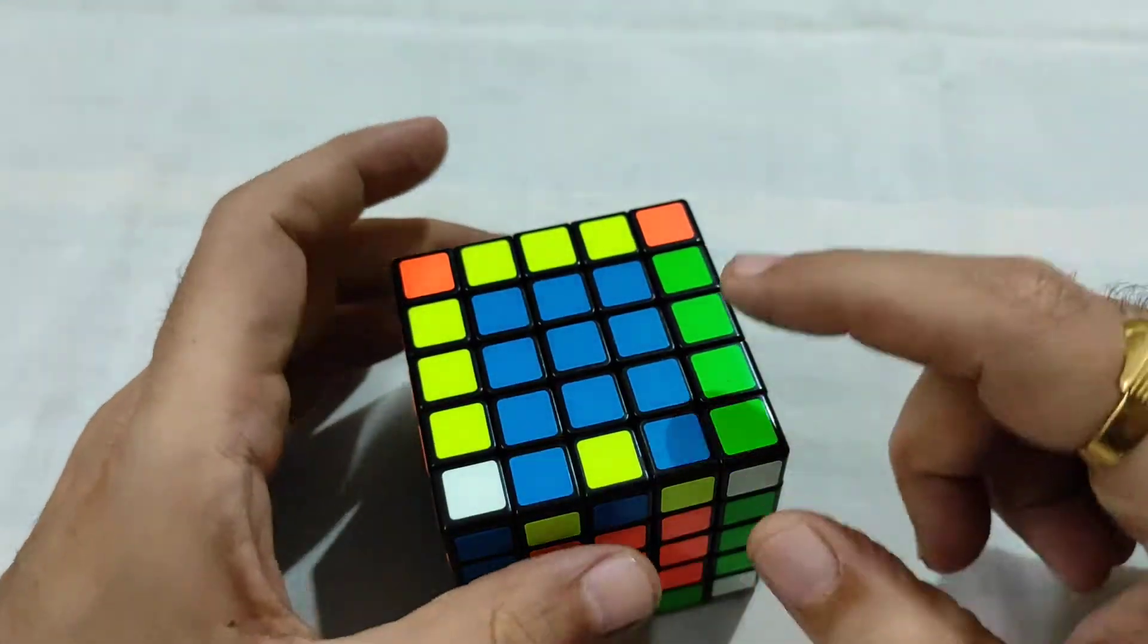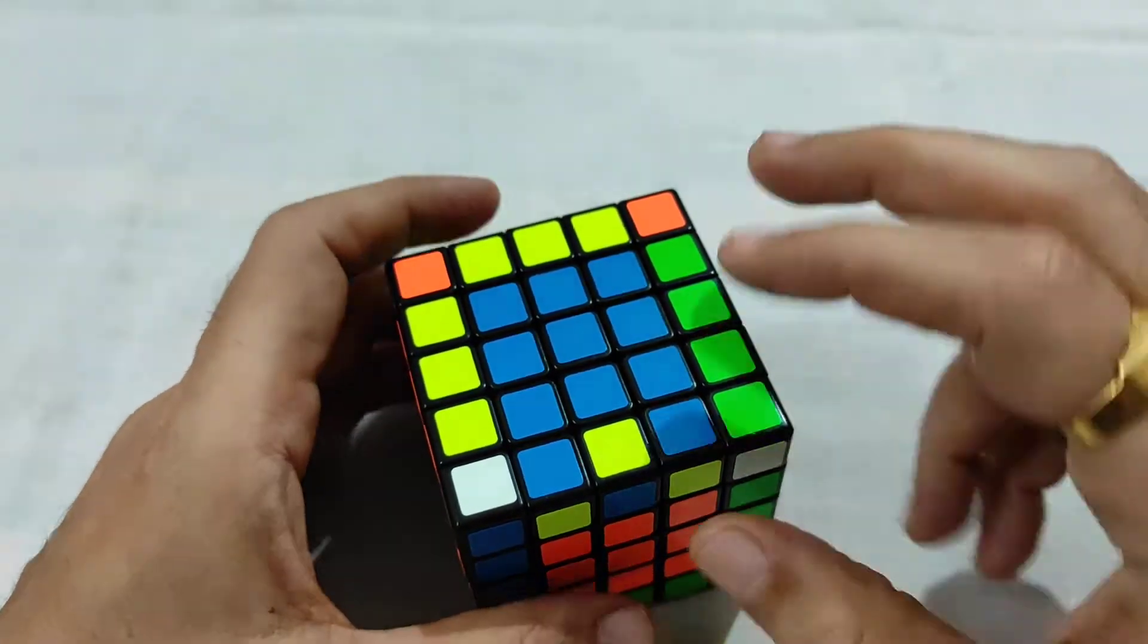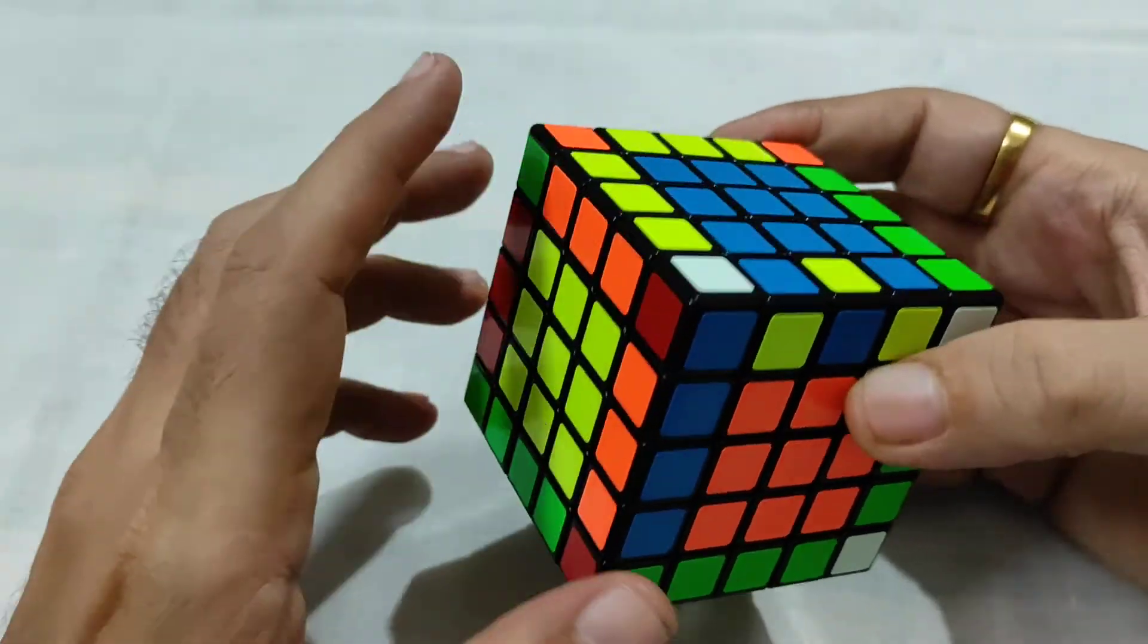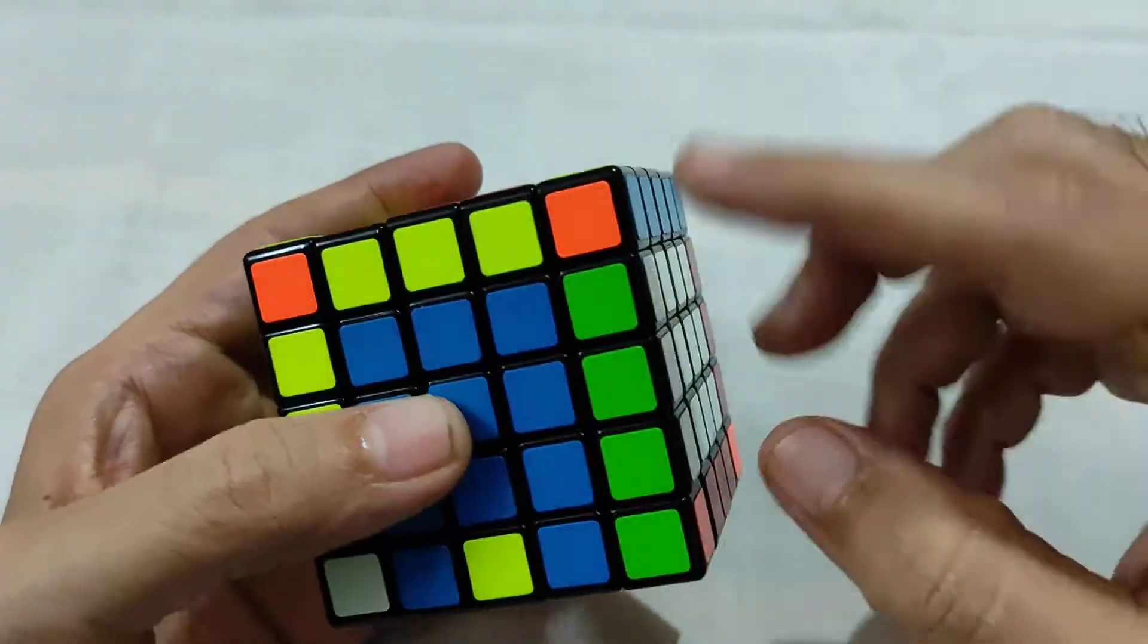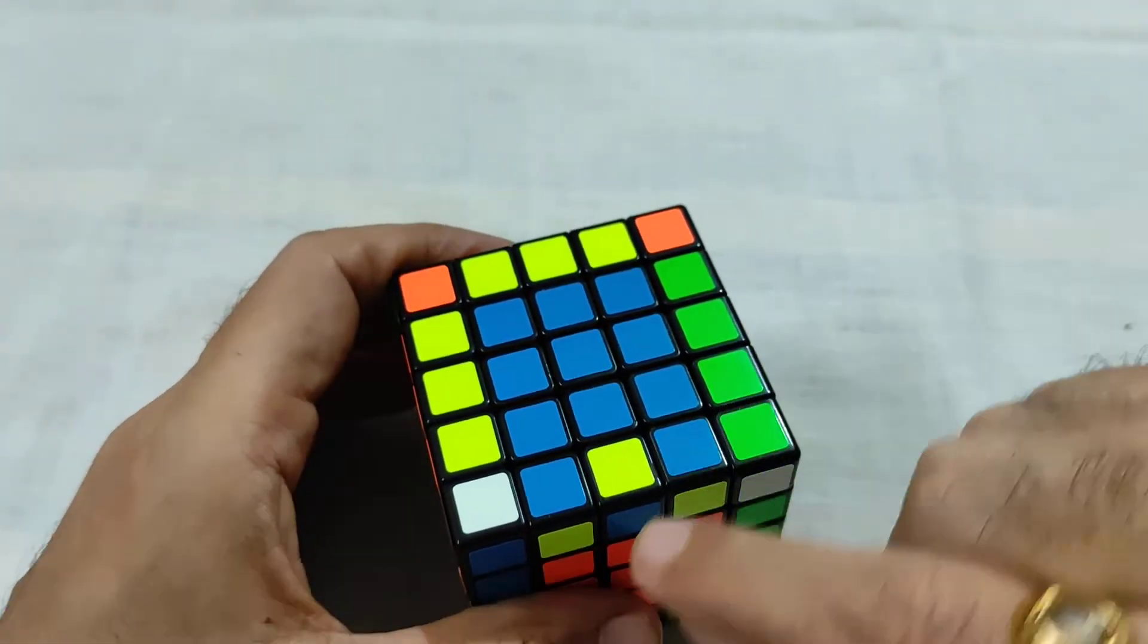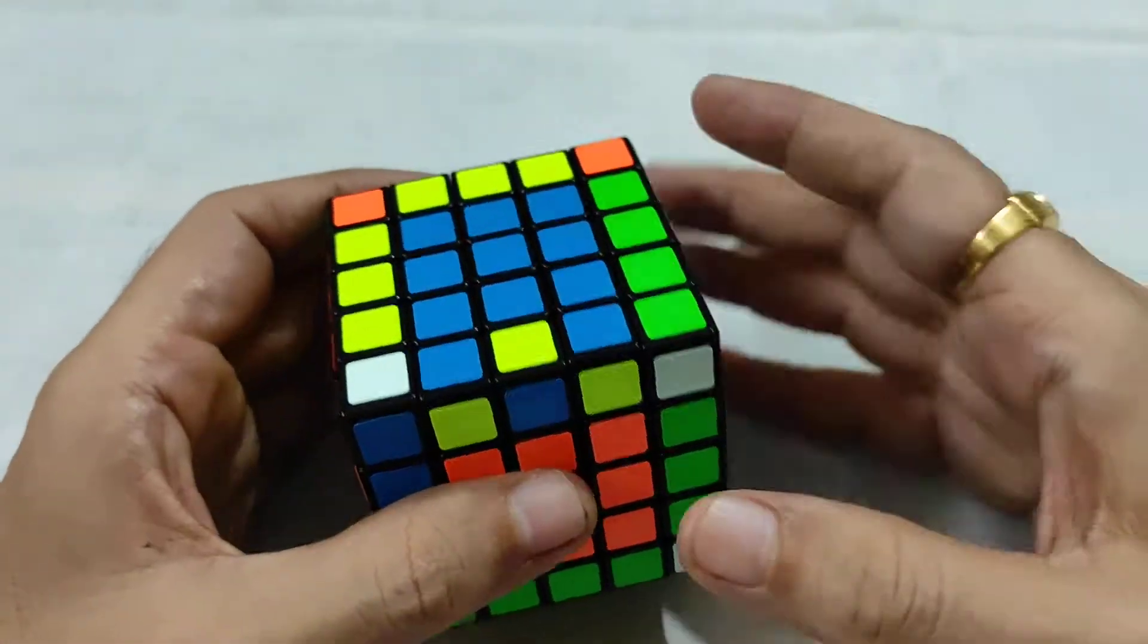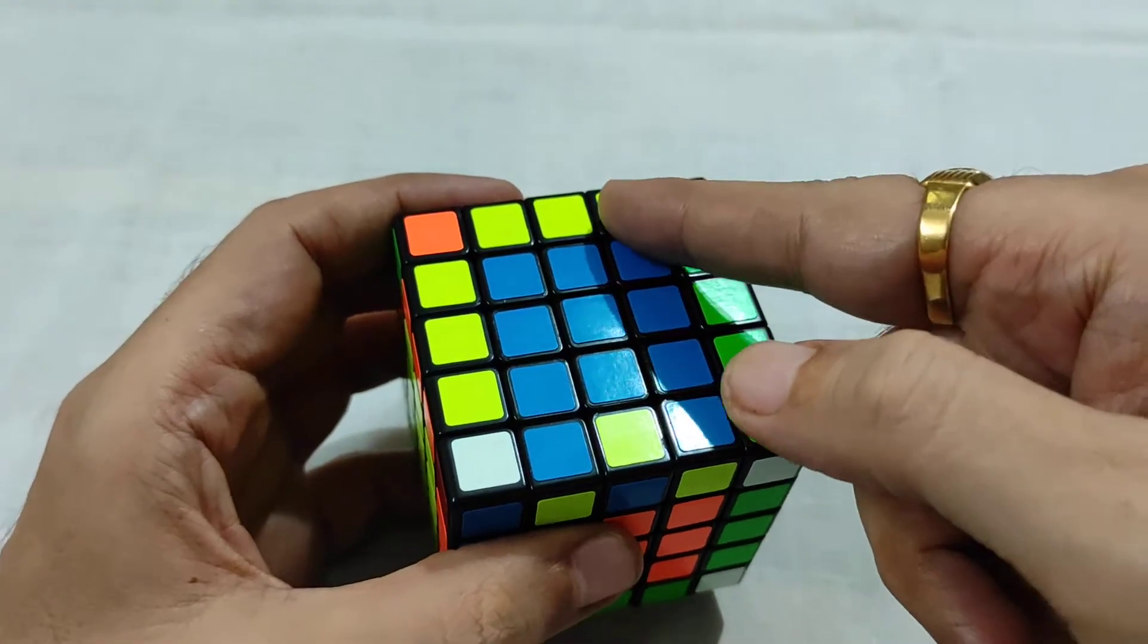Okay, so this is edge parity of 5 by 5. As I mentioned, all the edge pieces are solved except this edge, and two pieces are flipped. So we'll use one algorithm.